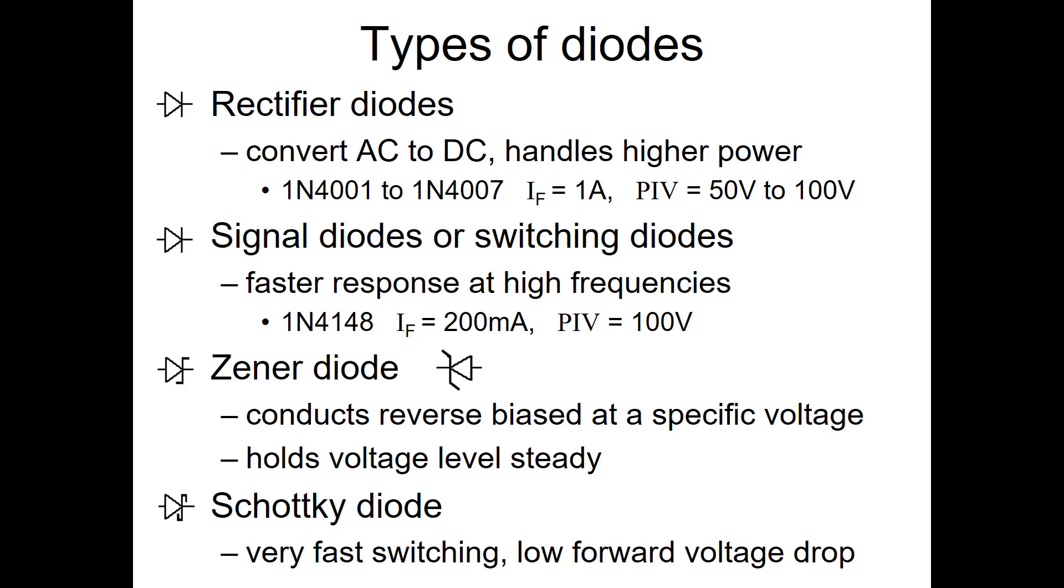Signal diodes, or switching diodes, are smaller. They have a faster response at high frequencies. So for digital work, or conducting on the on cycle and not conducting on the off, switching diodes are a better choice for that.